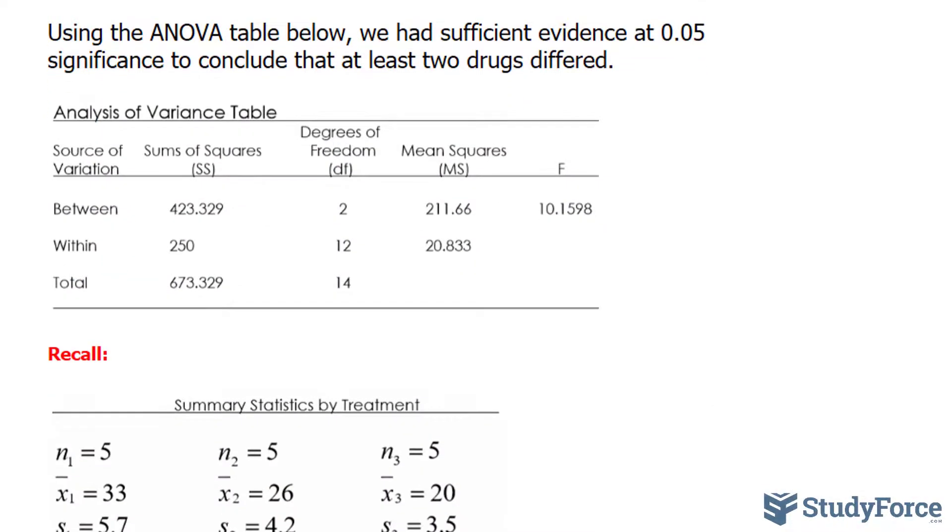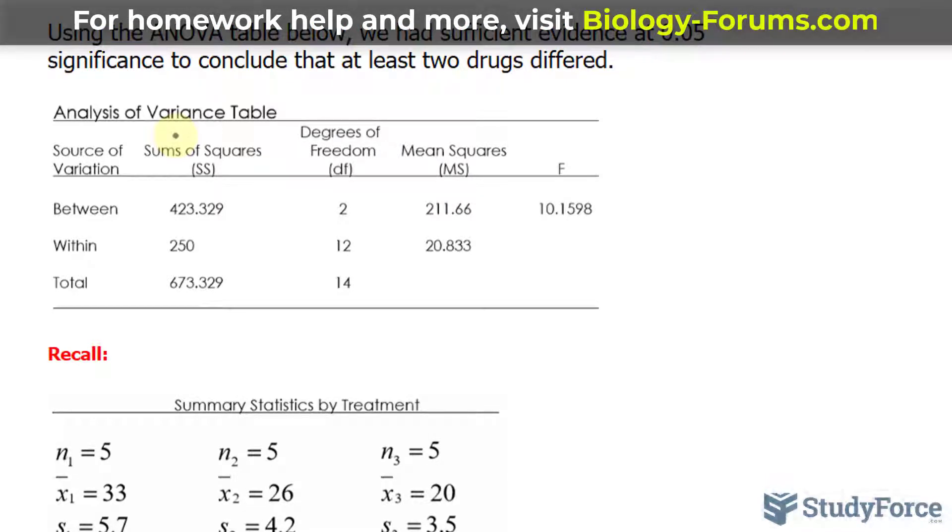Using this information, we made our ANOVA table and eventually rejected the null hypothesis which said that all the groups were the same after the treatment in favor of the alternative. Scheffé's procedure also requires information found in this table, so we'll be using it again moving forward.